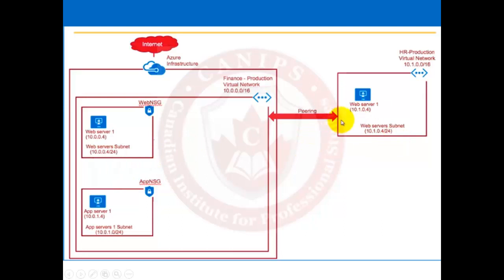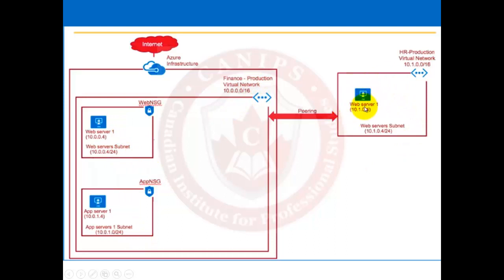So what we're going to do in the lab: we already have a vNetwork with the address space 10.0.0.0 created. I'm going to create another virtual network in the same region and then apply peering between the two networks. We already have VMs in the subnets inside virtual network one, and we're going to create another VM. The VMs should be able to ping each other using vNet peering.